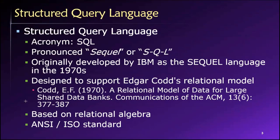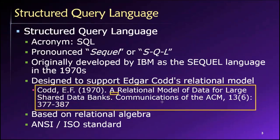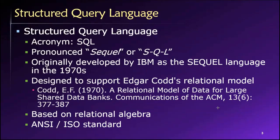The SQL language developed by IBM evolved into what we now call the structured query language, designed to support Codd's very famous relational model. This was published in CACM — a leading computer science journal — in 1970, and has become one of the most influential computer science papers ever written. It's been cited thousands of times and created the entire framework for relational databases, which now serves as the foundation of most modern organizations.